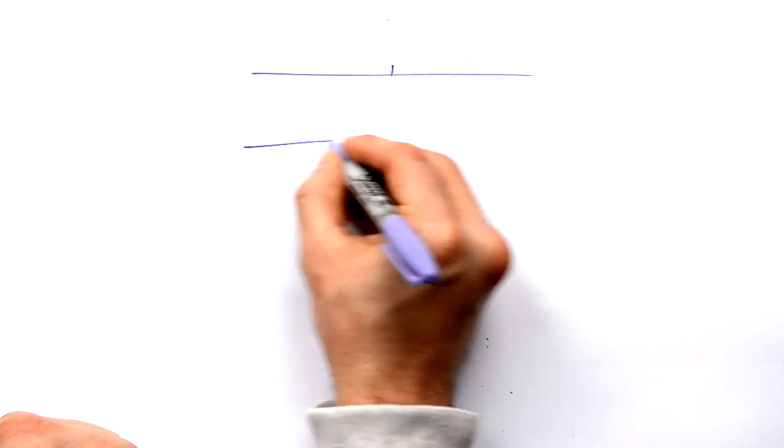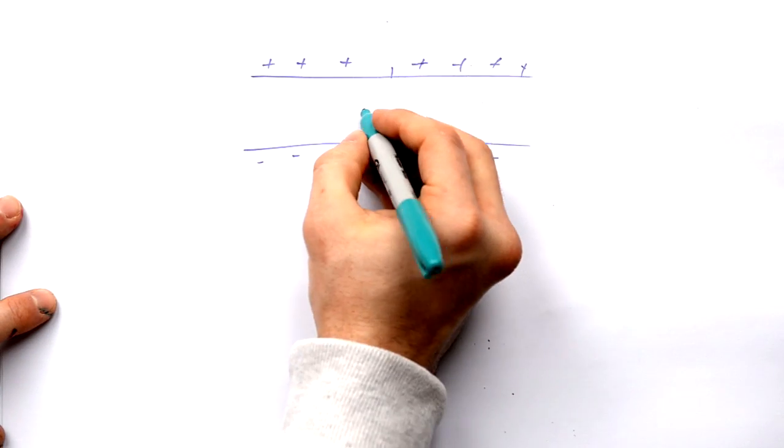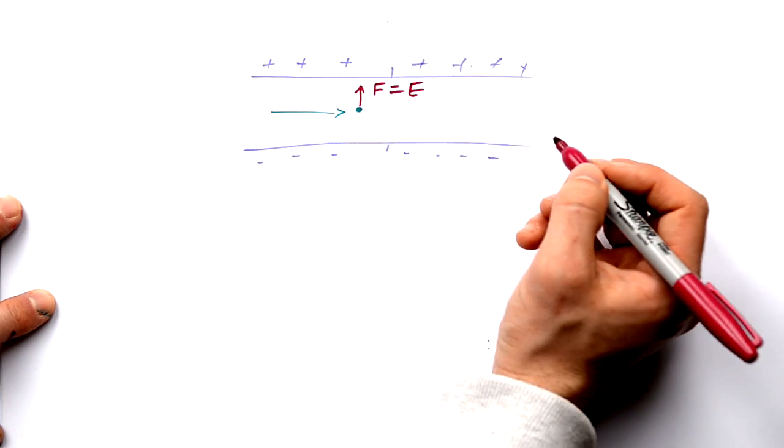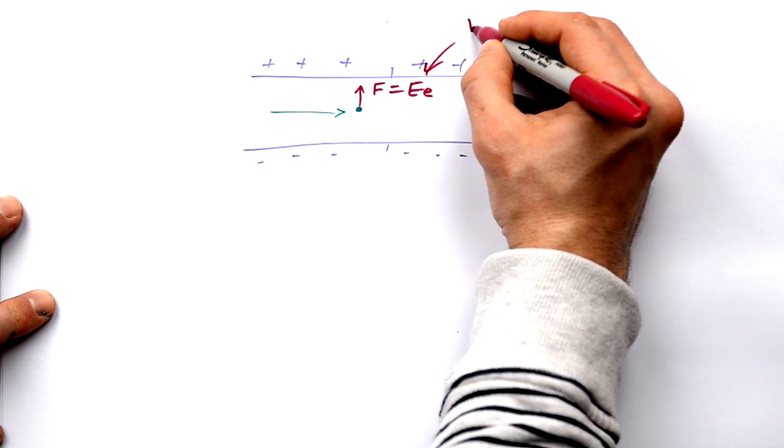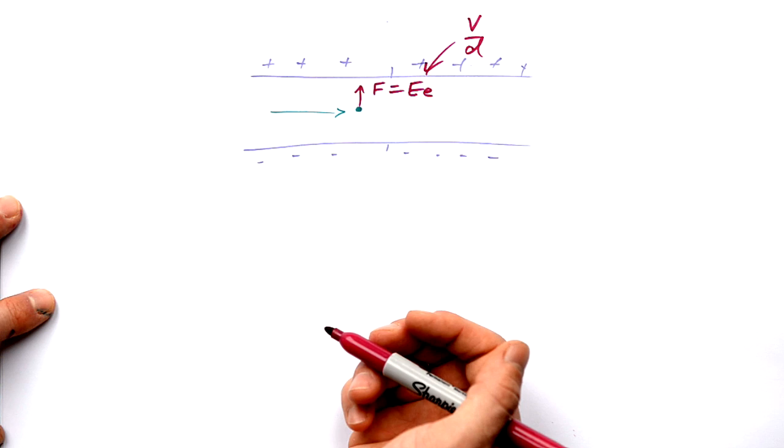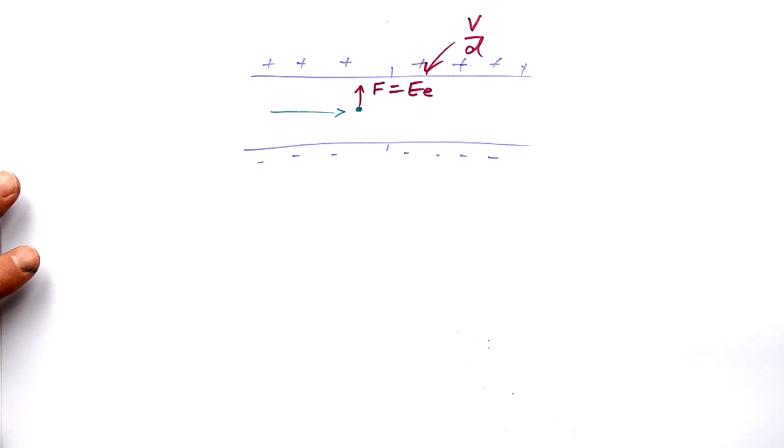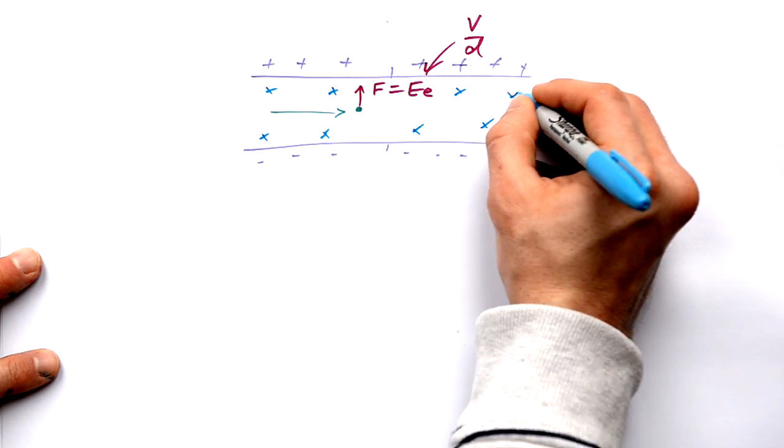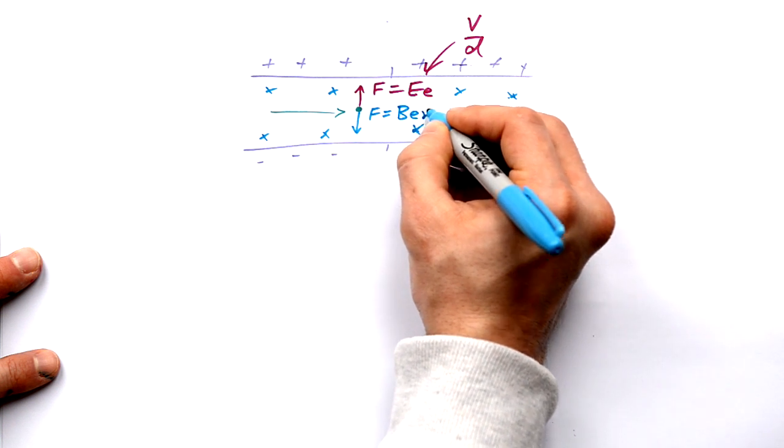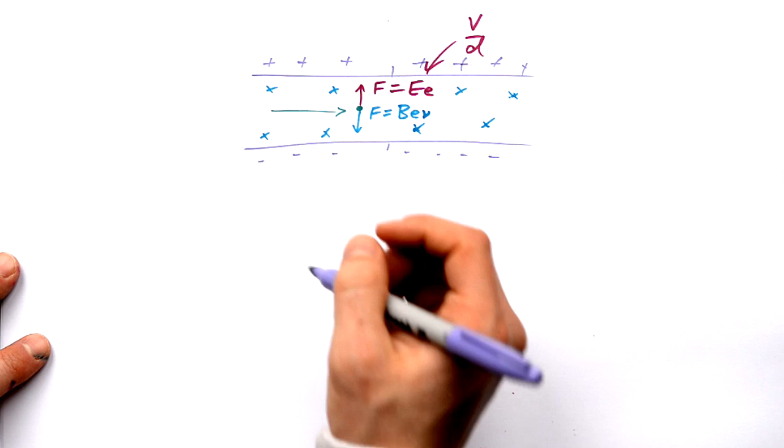Method number one is firing electrons through parallel plates. Between these plates we obviously have an electric field. If we fire electrons from an electron gun through here, they're going to feel a force. This equals the electric field strength times E. By the way, the electric field strength equals the PD across the plates divided by D. Be careful, this PD is not the PD used to fire the electrons to begin with. If that was left to happen, the electron would go upwards. But what we do is have a magnetic field as well. If you have a magnetic field going into the page and according to Fleming's left hand rule, the force is going to pull downwards. That force equals BEV, the speed of the electron. What we do is tweak the electric field so we have a force balancing the magnetic force, and we end up with EE equals BEV.